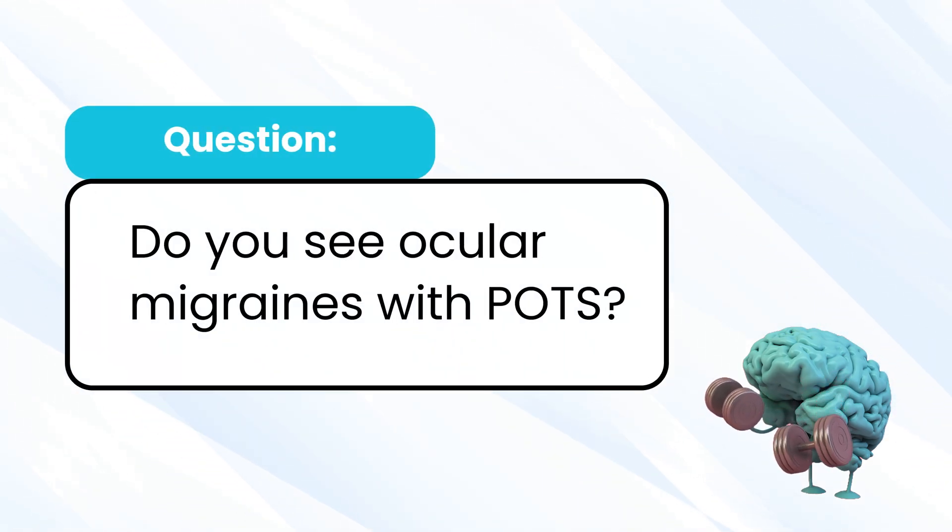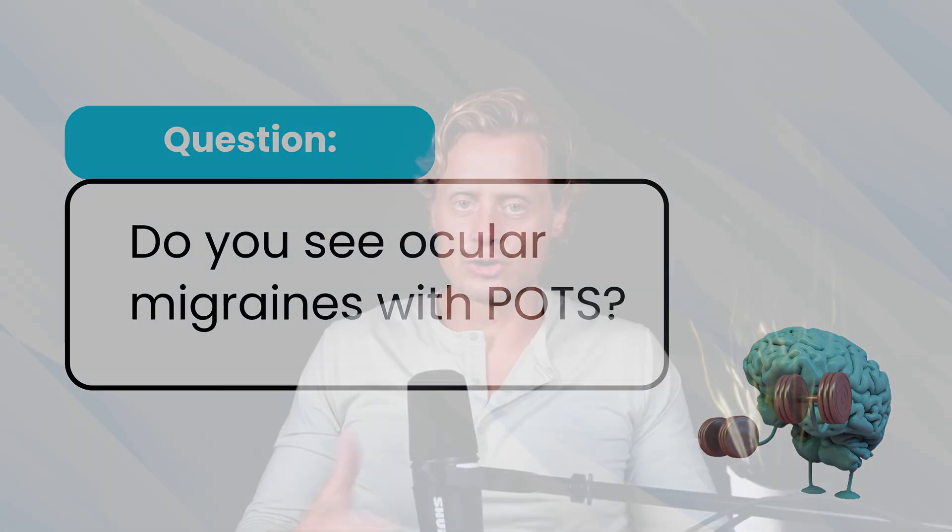Do you see ocular migraines with POTS? Let's talk about migraine in general with POTS. Migraine is a bit of a tough diagnosis because we get different things lumped into it, whether there's pain or not. When we start talking about ocular migraines, vestibular migraines, abdominal migraines, hemiplegic migraines, what we're getting to is alterations to blood flow in a particular region. Ocular migraine tends to come either in the eye, but more often in the occipital lobe.